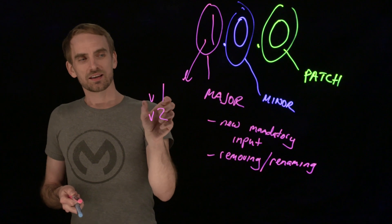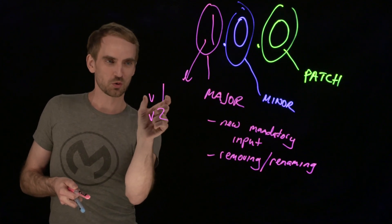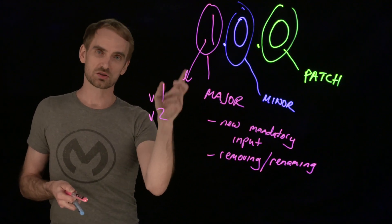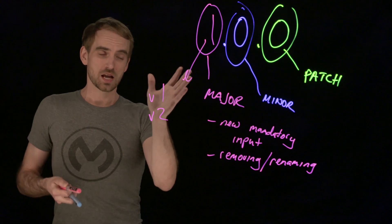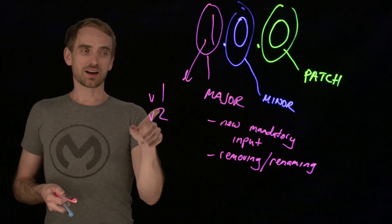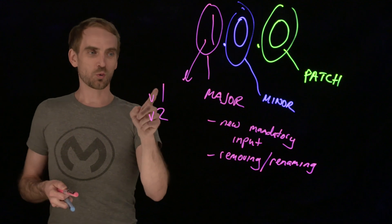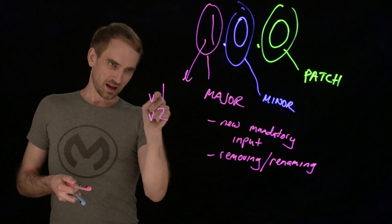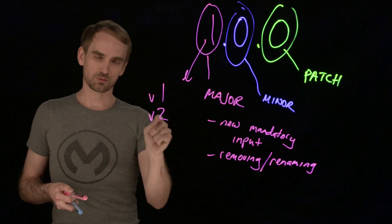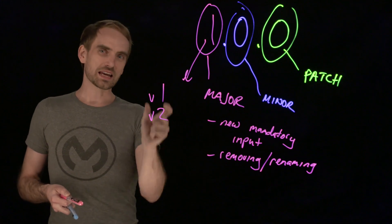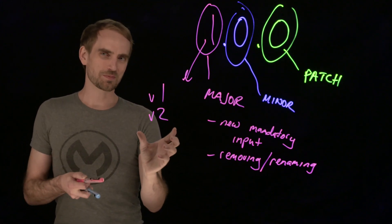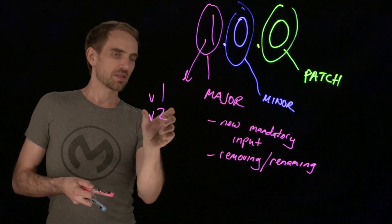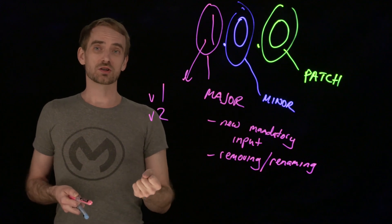So you'll either lie about the version — staying on version 1.0 even though you're up to version 1.5 — or you'll keep incrementing both digits but only ever change one of them, like going version 1.0, 2.0, 3.0. If you're just honest about it and start by using the major version, which is what matters for breaking changes, then just use that as your API version and move on.